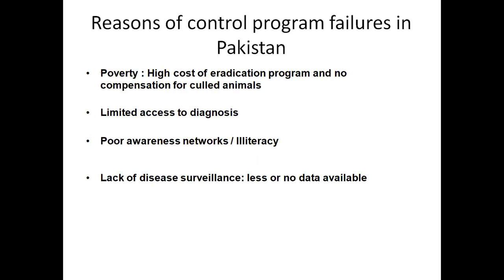Reasons for control program failures in Pakistan include: poverty and high costs of eradication programs with no compensation for culled animals — since TB-positive animals are usually not treated but slaughtered, and the government cannot pay farmers for culled animals. There is also limited access to diagnosis, meaning the disease goes undetected and keeps transmitting. Additionally, poor awareness and literacy programs mean farmers don't understand the importance of TB testing, keeping prevalence high in Pakistan.